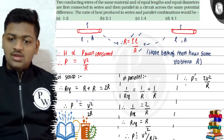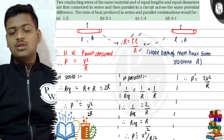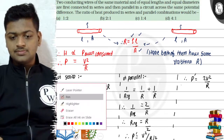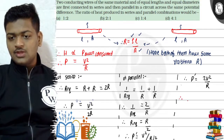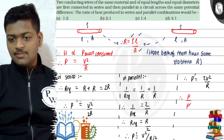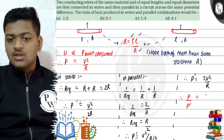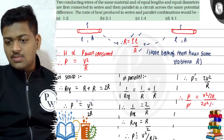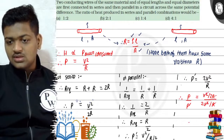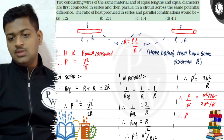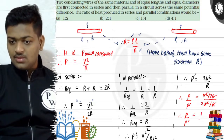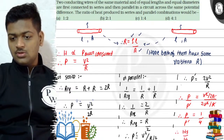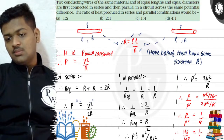They want the ratio of heat produced in series to parallel. Since heat produced equals power consumed, the ratio P/P' = (V²/2R) / (2V²/R). R and V² cancel out, giving us 1/4. So the heat produced in series upon heat produced in parallel is equal to 1/4.